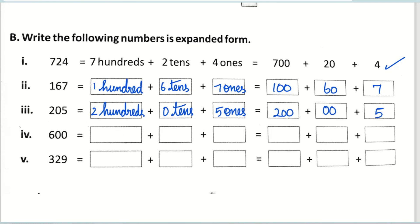Next is six hundred. How many hundreds? Six hundred. How many tens? Zero tens. And how many ones? Zero ones. So it is six hundred plus zero plus zero.